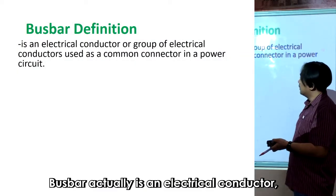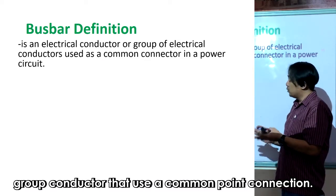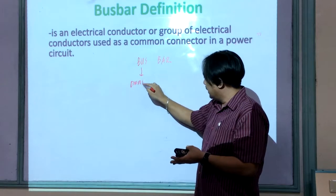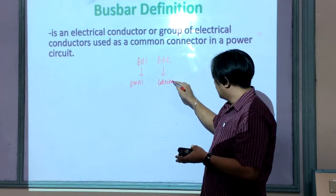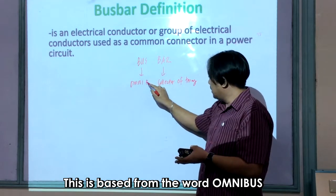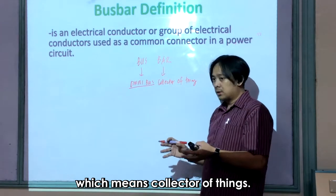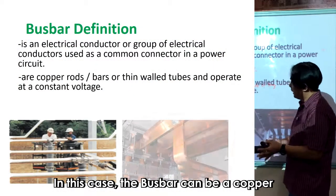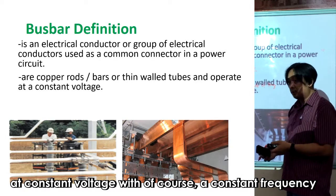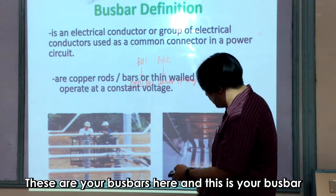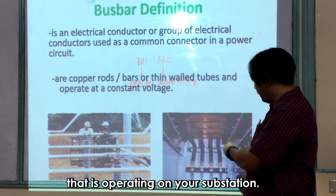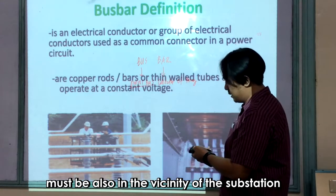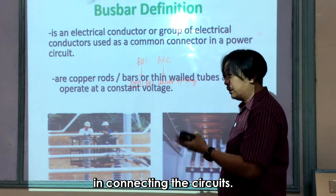The last part is a bus bar. A bus bar is an electrical conductor or group of conductors that serves as a common point connection. The word 'bus' is derived from a Latin word meaning 'only,' and 'bar' means a collector of things. A bus bar can be a copper or envelope tube that operates at constant frequency. Bus bars operate on your substation, and you can also expect a neutral bus in the vicinity for connecting circuits.